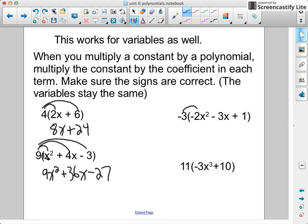Over here, multiplying coefficients. Keep the sign with it. You can pretend that that's like a negative sign when you're multiplying. So negative 3 times negative 2 is positive 6x squared. Negative 3 times negative 3x is plus 9x. Negative 3 times 1 is negative 3.